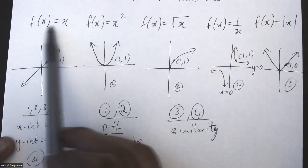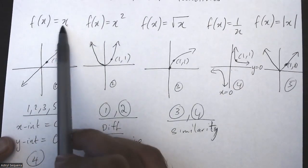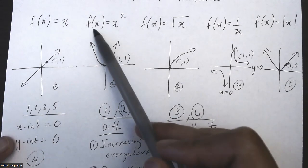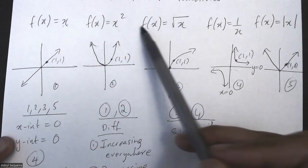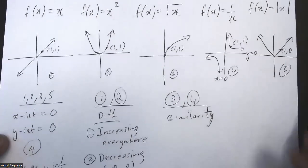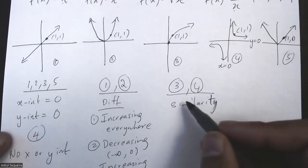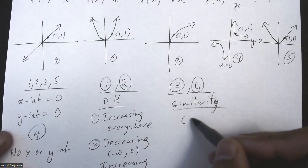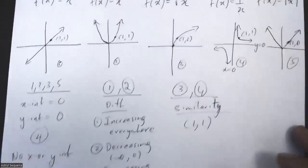And if you think about it, if I replace x here with 1, y will be 1. One squared is also 1. The square root of 1 is also 1. One divided by 1 is 1. Absolute of 1 is 1. So this is a pretty important similarity to say that they pass through (1, 1).